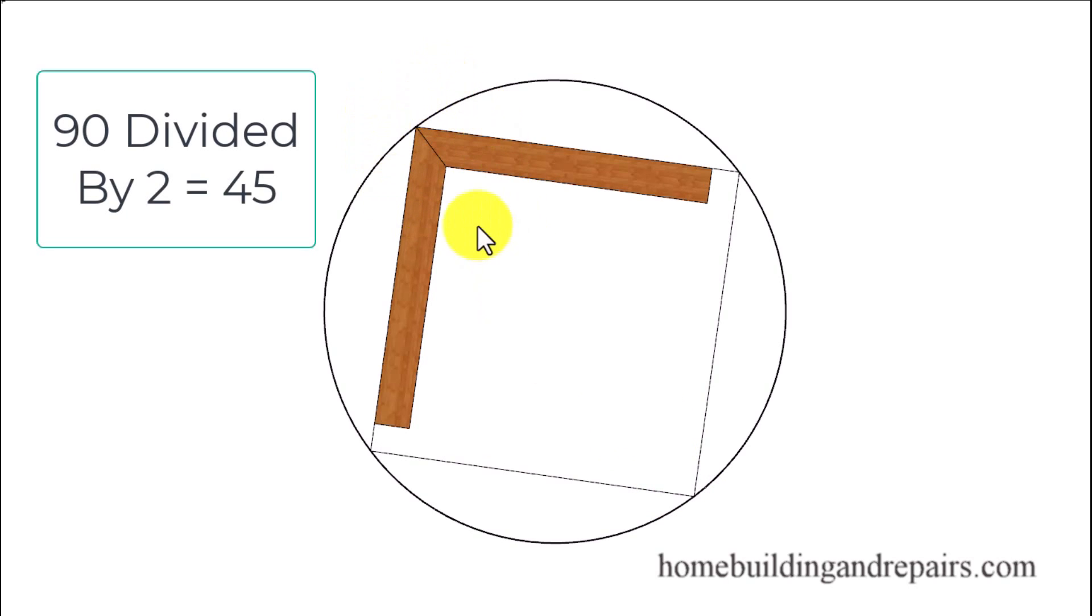To figure out the mitered angle we're simply going to divide this angle by two. In this example here we would have two separate 45 degree angles. Since this is something most of you are familiar with, I chose to use this in our example. However, it will work throughout all of the other polygons.